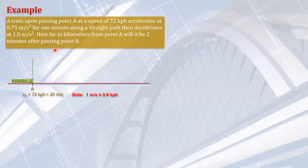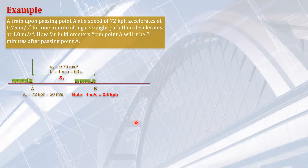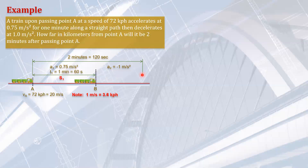It says here that it accelerates at 0.75 meter per second squared for one minute, or 60 seconds. So the train will travel a distance S1 during that time. And then after that, it will slow down — decelerate at 1 meter per second squared, so the acceleration is negative 1. The question is how far the train will be two minutes, or a total of 120 seconds, after it passed point A. The time of travel while accelerating is 60 seconds, and while decelerating is also 60 seconds.